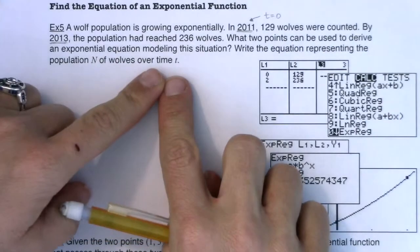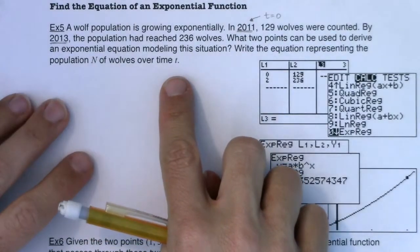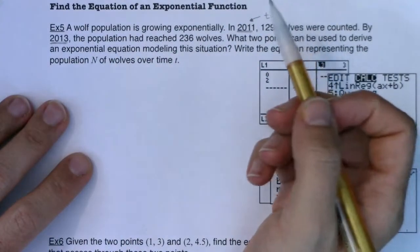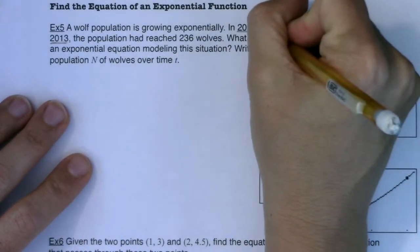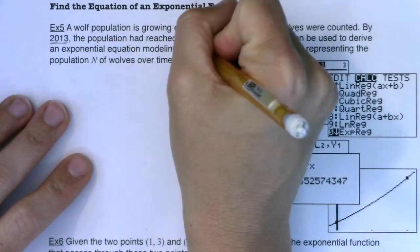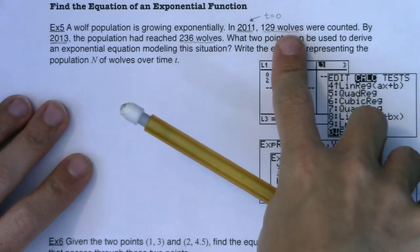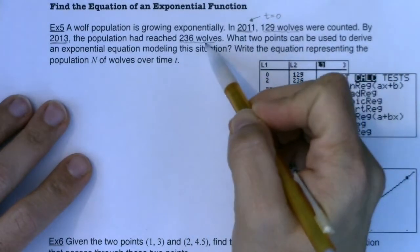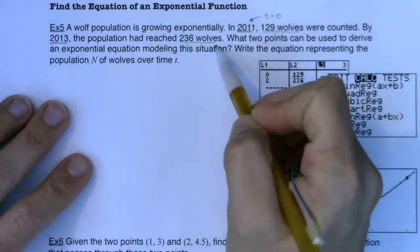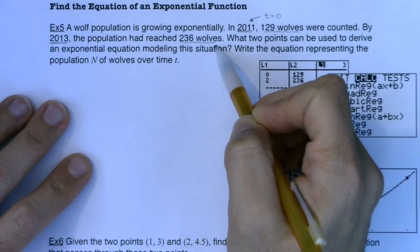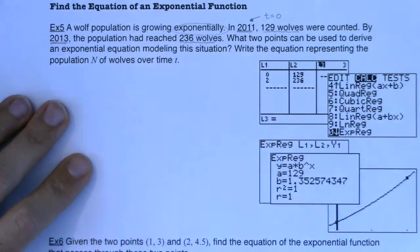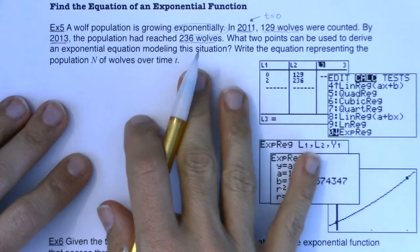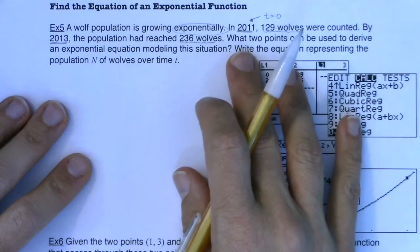So I've got two time values. And I also see my other variable is this wolf population. I see 129 wolves and then 236 wolves. So taking a look at this, I can see that the wolves are growing. We have some kind of growth in their population. And one of the buzzwords here is it says they're growing exponentially. They're not growing linearly. They're not growing quadratically. They're growing exponentially.